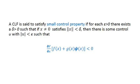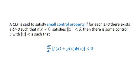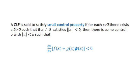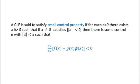In other words, the CLF satisfies the small control property when there exist epsilon and delta (both positive), where epsilon bounds the control and delta bounds the state variables, and the system is overall stable — meaning the derivative of the Lyapunov function is negative definite. The energy of the system decreases with time and the states do not become unbounded.